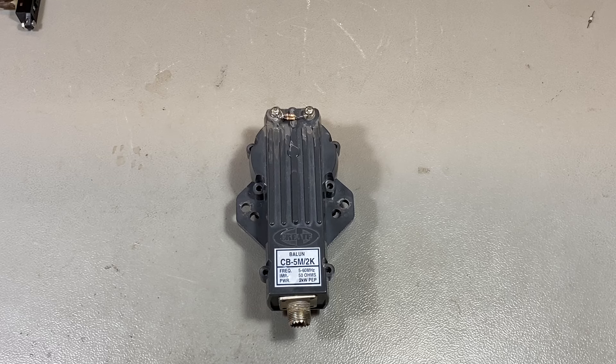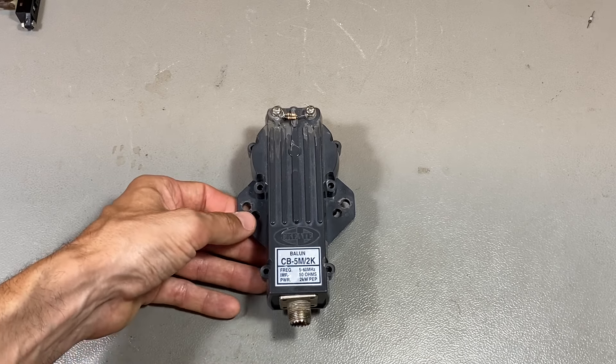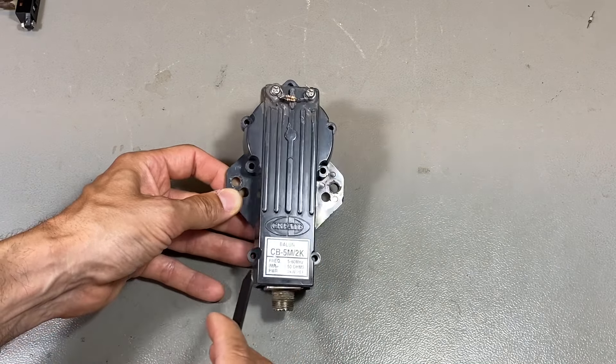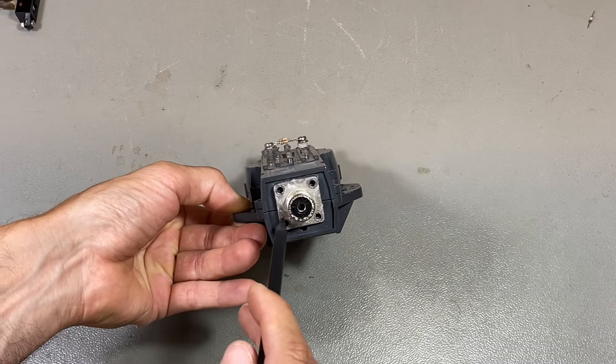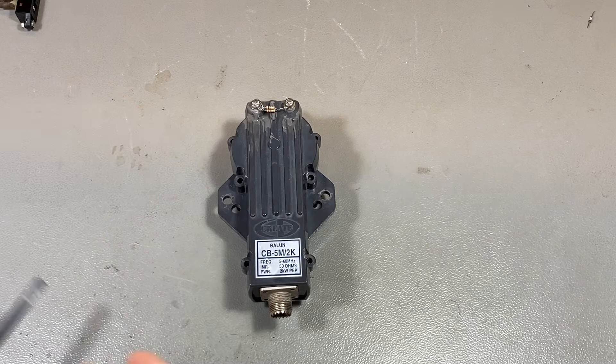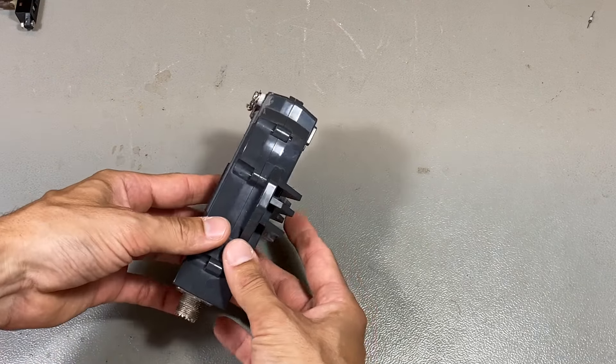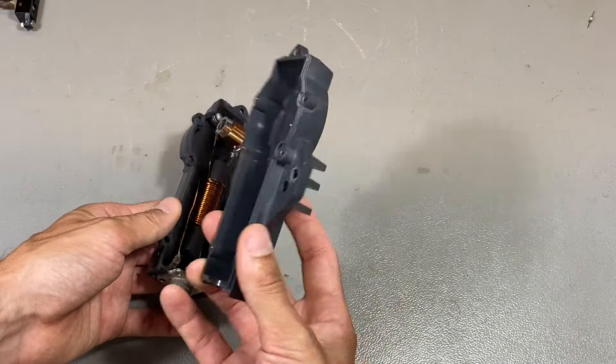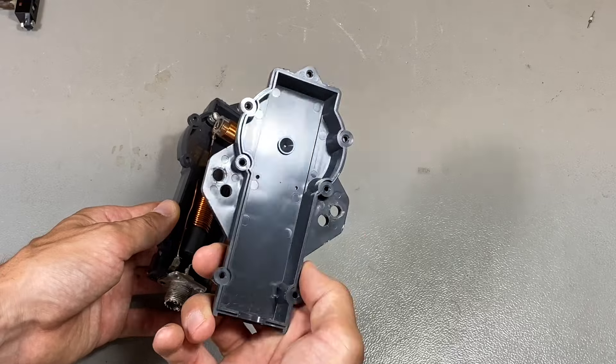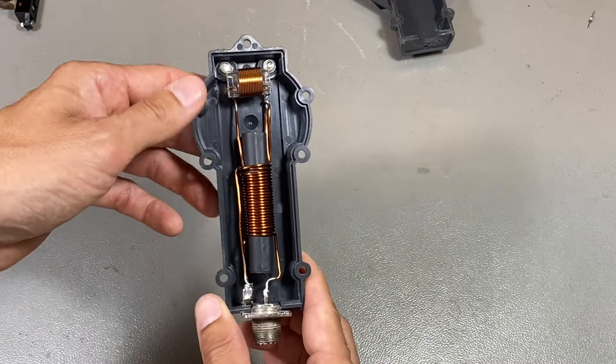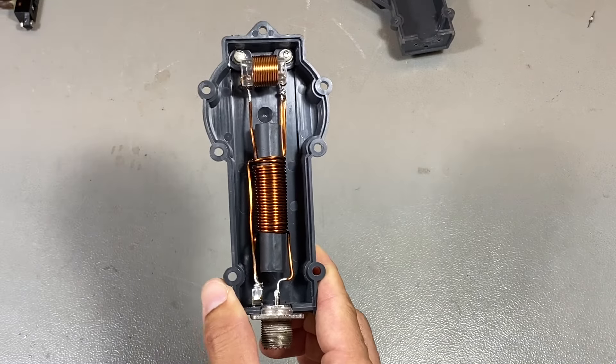I have already removed all the screws. There are seven screws plus screws on the connector. You have to remove all of these and then the balun easily opens in two pieces. Here we've got just plastic. I gave it a clean because there were some spiders inside. And this is what we find inside this object.